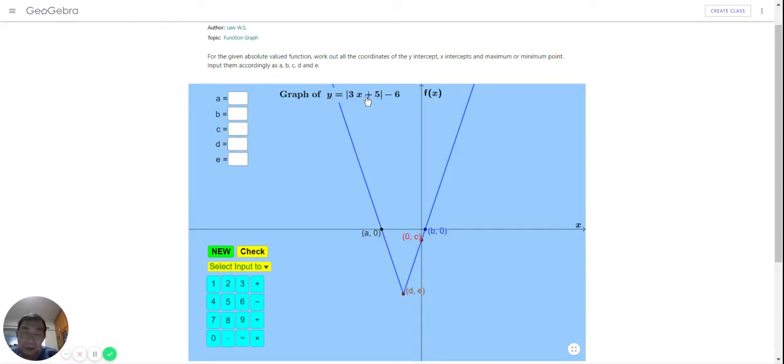But negative of 3x plus 5 could also equal 6. So let's take a look at the negative value first because we want the leftmost value, which is a. Assuming that the negative of 3x plus 5 equals 6, then 3x plus 5 will equal negative 6. And when you bring the 5 over to the other side, it will be negative 11.